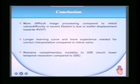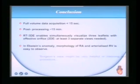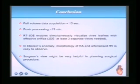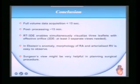It is more difficult to image the tricuspid valve compared to the mitral valve. It has taken a longer learning curve and more experience is needed to interpret it correctly. It remains a very complementary modality to 2D echo — we are still not at a stage where we can do 3D echo on tricuspid valve without 2D echo. Full-volume data acquisition is now, unlike previous software, very easy to acquire in less than 15 seconds. Post-processing takes only 15 minutes to get the entire picture, and for lesions like Ebstein's anomaly, the morphology of the atrialized RV is easy to observe on 3D, and the surgeon's view is very helpful in planning the surgical procedure. Thank you all for your patient listening.